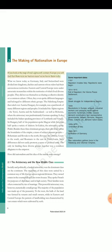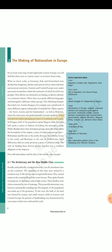If you look at the map of mid-18th century Europe you will find that there were no nation-states as we know them today. What we know today as Germany, Italy and Switzerland were divided into kingdoms, duchies and cantons whose rulers had their autonomous territories. Eastern and Central Europe were under autocratic monarchies within the territories of which lived diverse peoples. They did not see themselves as sharing a collective identity or a common culture. Often, they even spoke different languages and belonged to different ethnic groups. The Habsburg Empire that ruled over Austria-Hungary, for example, was a patchwork of many different regions and peoples. It included the Alpine regions, the Tyrol, Austria and the Sudetenland, as well as Bohemia, where the aristocracy was predominantly German-speaking. It also included the Italian-speaking provinces of Lombardy and Venetia. In Hungary, half of the population spoke Magyar while the other half spoke a variety of dialects. In Galicia, the aristocracy spoke Polish. Besides these three dominant groups, there also lived within the boundaries of the empire a mass of subject-peasant peoples — Bohemians and Slovaks to the north, Slovenes in Carniola, Croats to the south, and Romanians to the east in Transylvania. Such differences did not easily promote a sense of political unity. The only tie binding these diverse groups together was a common allegiance to the emperor.